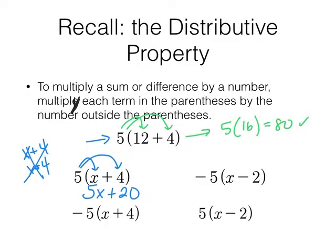5x plus 20. Or like in the case of this one, a negative 5. Negative 5x plus negative 20. But I'm not going to write plus negative 20. I'm going to write minus 20. Because that's the better way to write it.